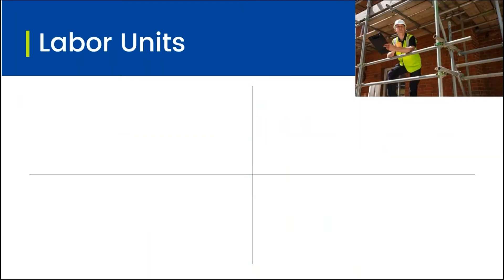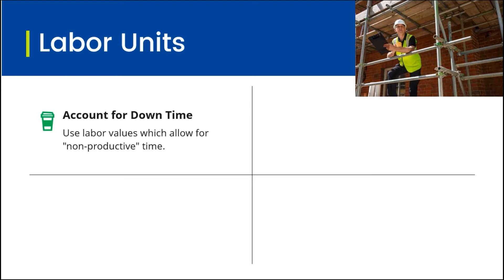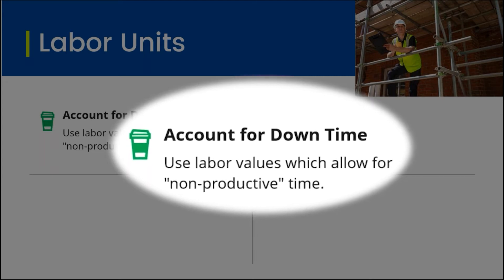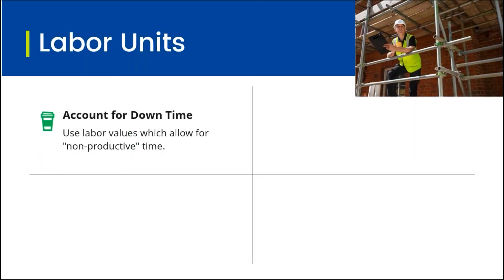As challenging as material pricing is, the labor aspect is probably even more challenging because there are a lot of subjective factors. One of them is downtime — how much downtime do you expect? That can vary from job to job, from the size to the type of work. Your labor unit should incorporate at least some allowance for non-productive time: normal material handling, setup time, cleanup time. Typically if a labor unit is an hour, we figure at least a third of that is for non-productive time.